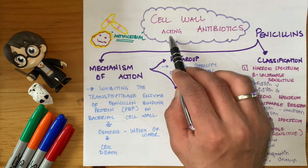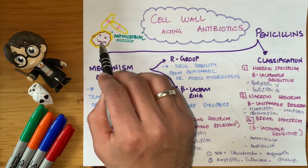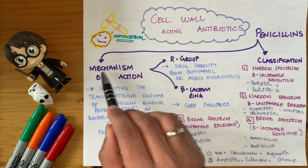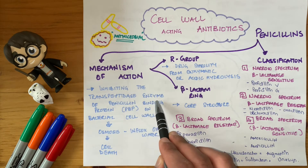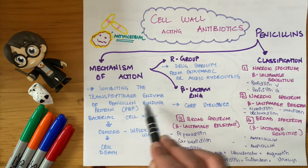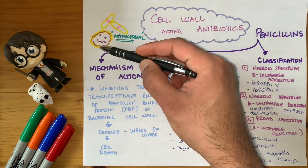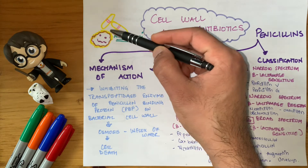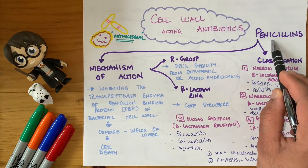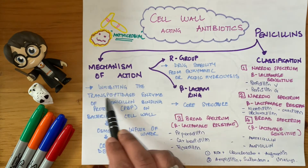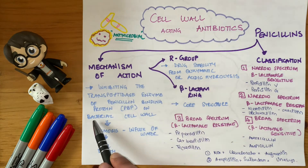We remember from the previous lecture that penicillins are cell wall acting antibiotics, which means penicillins act on the cell wall to kill bacteria. The mechanism of action: penicillins inhibit the transpeptidase enzyme, also known as penicillin binding protein (PBP). Every bacterial cell wall has this enzyme that helps it become a strong cell wall. Penicillins inhibit the transpeptidase enzyme, therefore producing a weaker wall with pores.